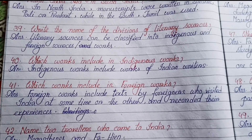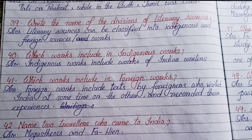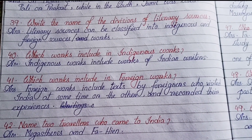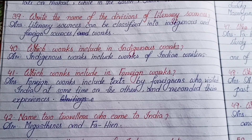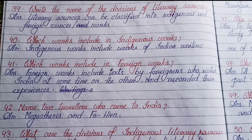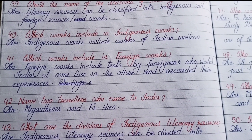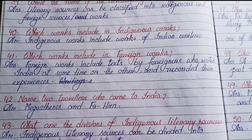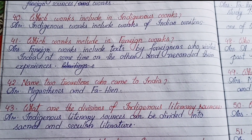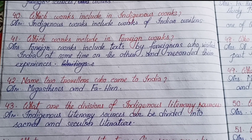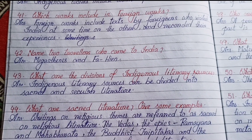Number thirty-nine: Write the names of divisions of literary sources. Literary sources can be classified into indigenous and foreign sources. Number forty and forty-one: Which works are included in indigenous works and foreign works? Indigenous works include works of Indian writers. Foreign works include texts by foreigners who visited India at some time or the other and recorded their experiences.